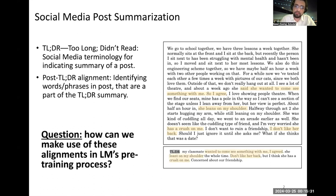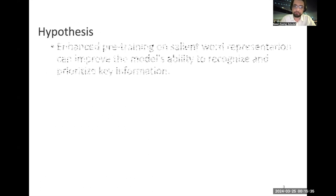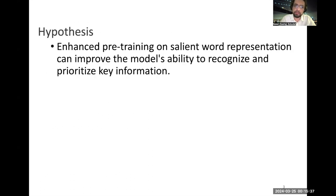The question raises here: how can we make use of these alignments in LM's pre-training process? We form our hypothesis: enhanced pre-training on salient word representations can improve the model's ability to recognize and prioritize the key information.